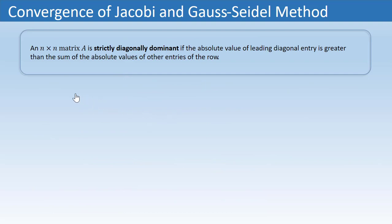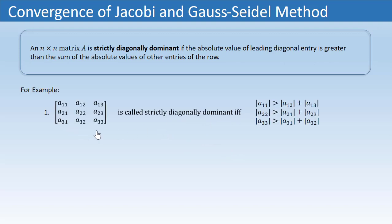The answer is yes, but before moving on let's understand a few related concepts. If you are given any square matrix A, that matrix is called strictly diagonally dominant if the absolute value of the leading diagonal entry is greater than the sum of the absolute values of the other entries on the same row. For a 3x3 matrix, this condition must hold for all three rows — the diagonal entry of each row must exceed the sum of the absolute values of the remaining entries in that row.